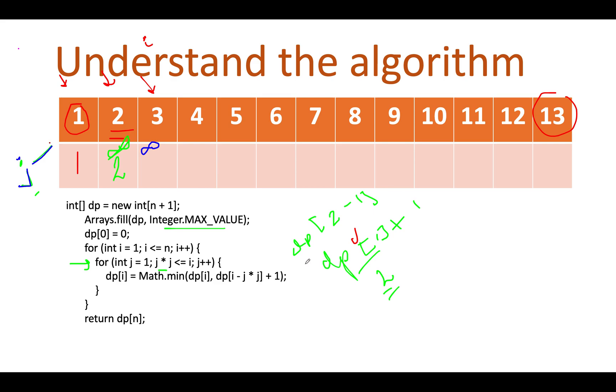What we are going to do will compute this value which is nothing but dp of three minus one square which is two plus one. So dp of two turns out to be equal to two and two plus one is three. So we got a possible answer which is three. So what we are going to do is replace it by three.